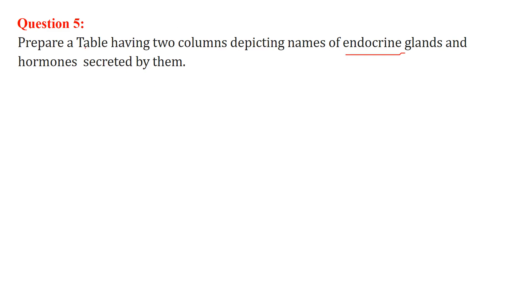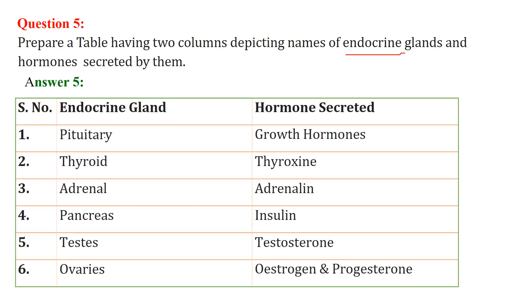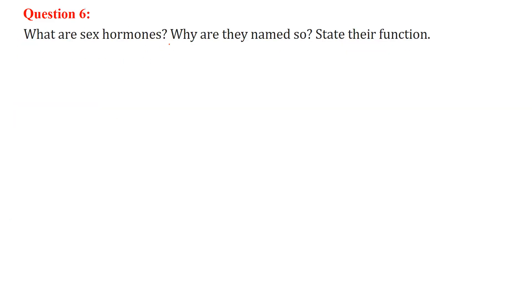Prepare a table with two columns showing the name of endocrine glands and hormones secreted by them: Pituitary secretes growth hormones; Thyroid secretes thyroxine; Adrenal secretes adrenalin; Pancreas secretes insulin; Testes secrete testosterone; Ovaries secrete oestrogen and progesterone.